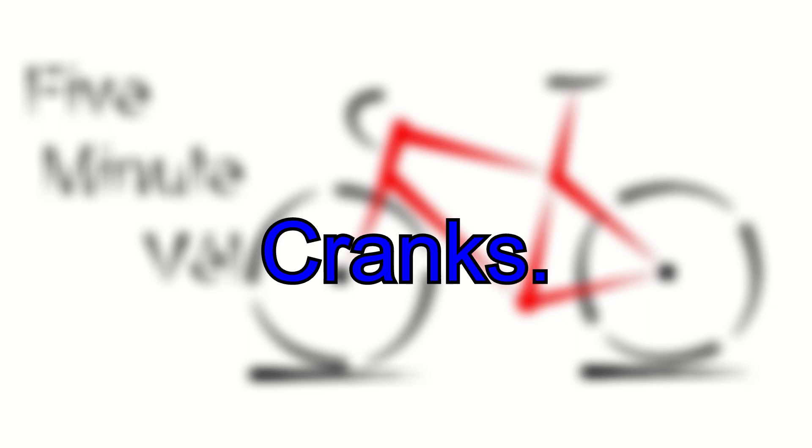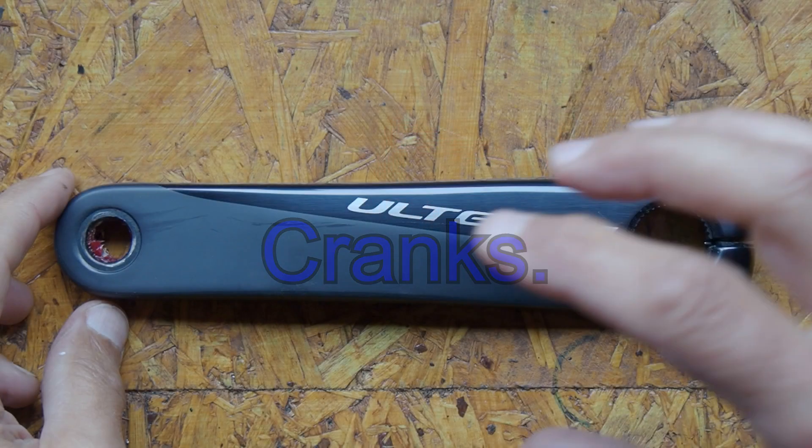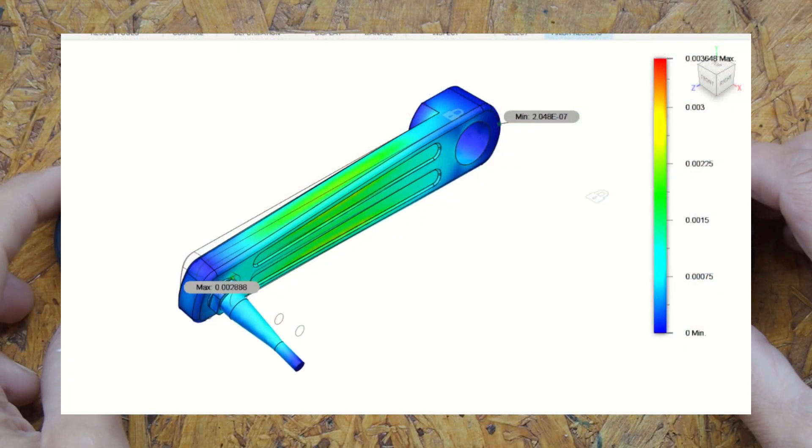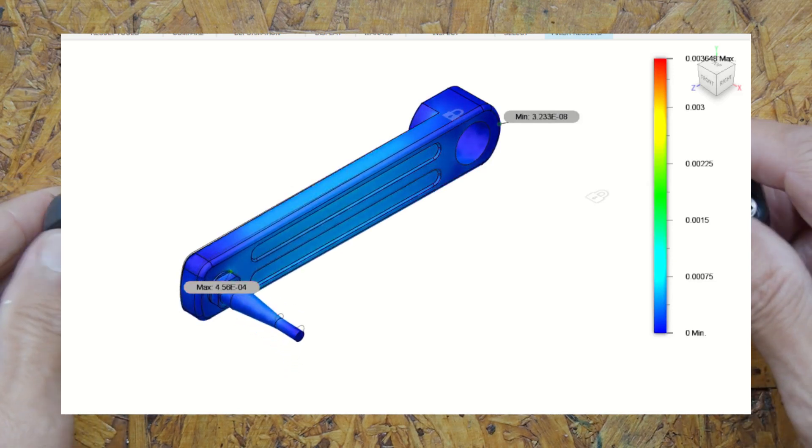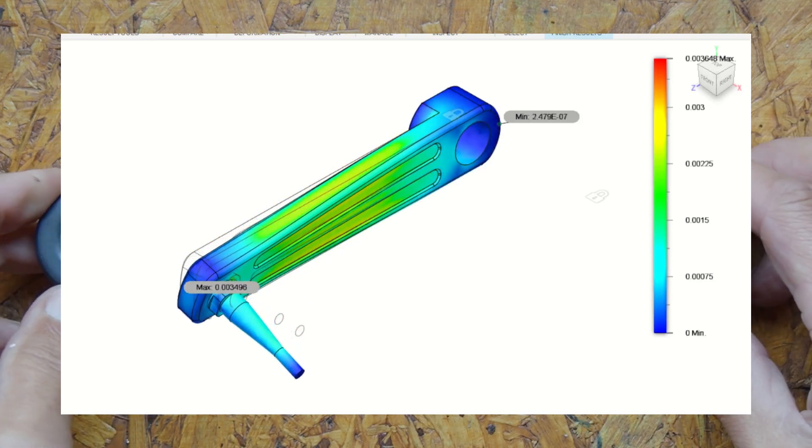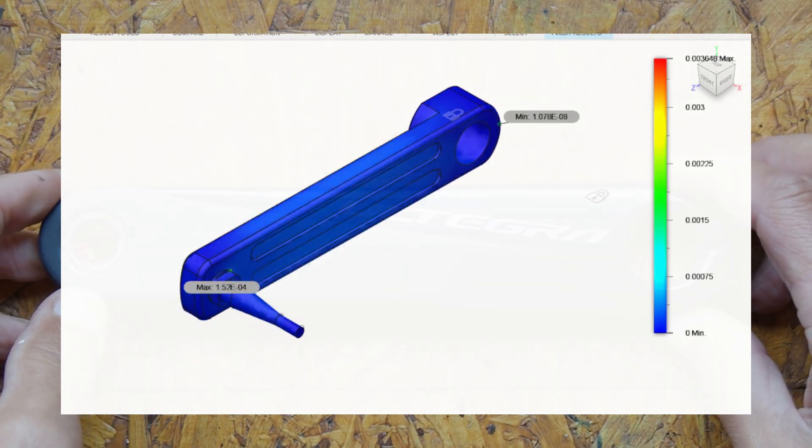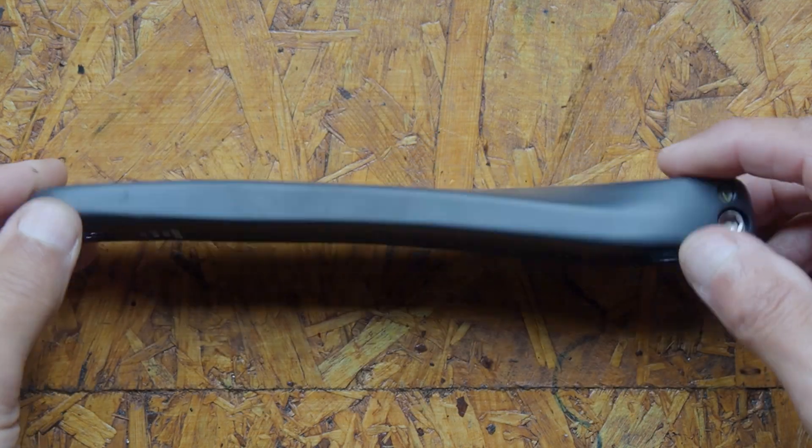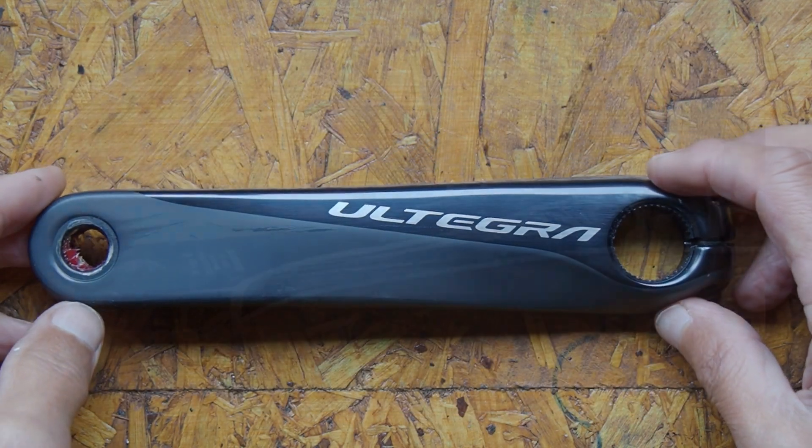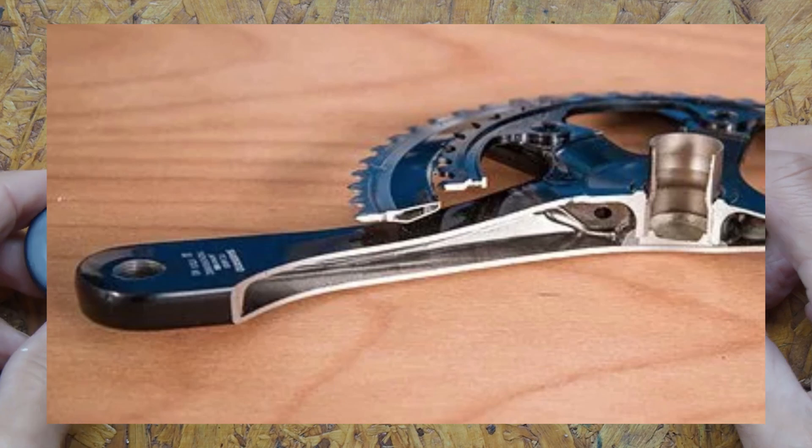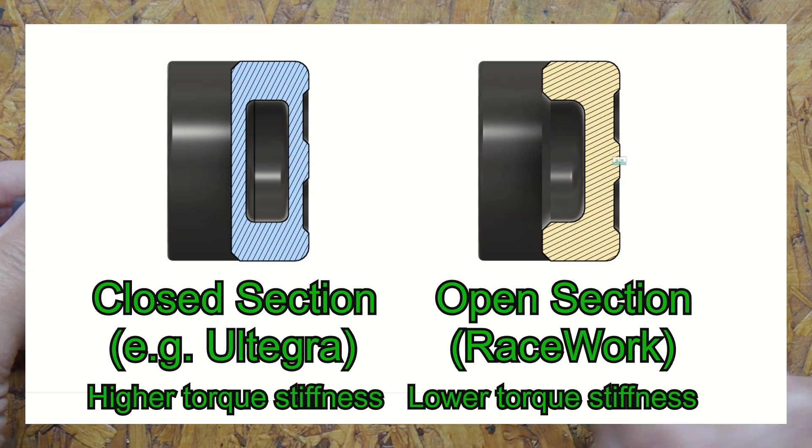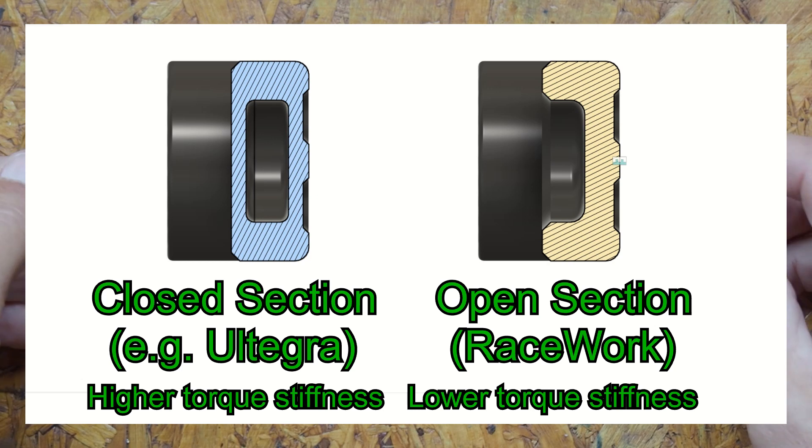However, many bicycle components like these cranks have a significant torque applied to them, and therefore you might want to optimize the rotational or torque stiffness. This is a Shimano Ultegra crank and it's of a hollow section design. The Race Work crank set that I previously showed is not hollow. It has an open section design.